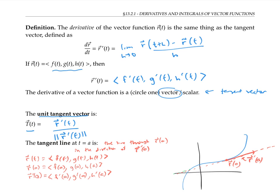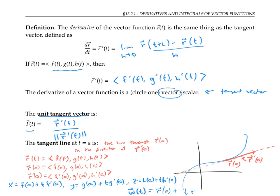So the line through this point with this direction can be given with parametric equations: x equals f(a) plus t times f prime(a), and y and z similarly. We can write the same thing more compactly with a vector equation: w of t equals r of a plus t times r prime of a. The components of w are just the x, y, and z coordinates of the line.